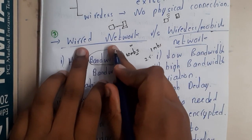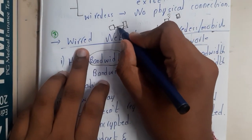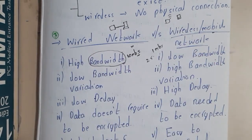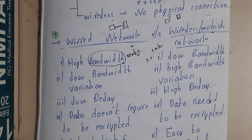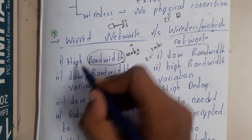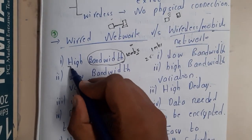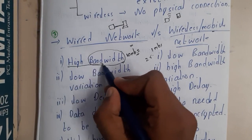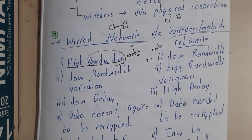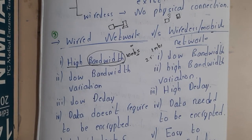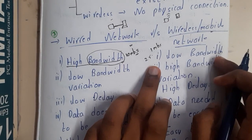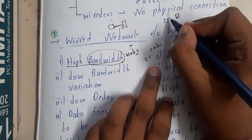In a wired connection, there is a particular wire so the data has no option but to travel continuously along that path. That is the reason why we have high bandwidth in wired — the data transmit rate is fast.